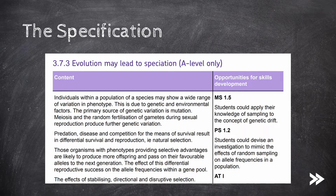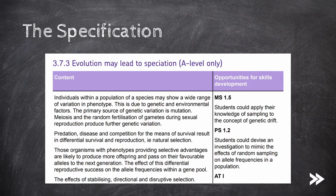A lot of what is mentioned here was already covered in previous topics. This includes things like the concept that individuals within a population of a species may show a wide range of variation in phenotype, and how this is due to genetic and environmental factors. We also know that mutations are the primary source of genetic variation, and that meiosis and random fertilization of gametes during sexual reproduction also produce further genetic variation. We've also already covered how predation, disease and competition for means of survival result in differential survival and reproduction, i.e. natural selection. We've also covered how natural selection works — organisms with phenotypes providing selective advantages are likely to produce more offspring and pass on their favourable alleles to the next generation. Over many generations, the frequency of the more favourable alleles increases in the population, and so therefore does this trait. We've also covered stabilising and directional selection.